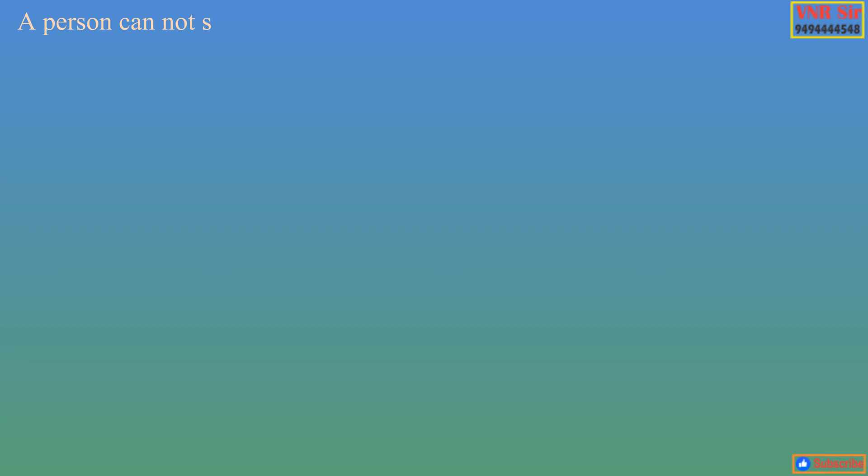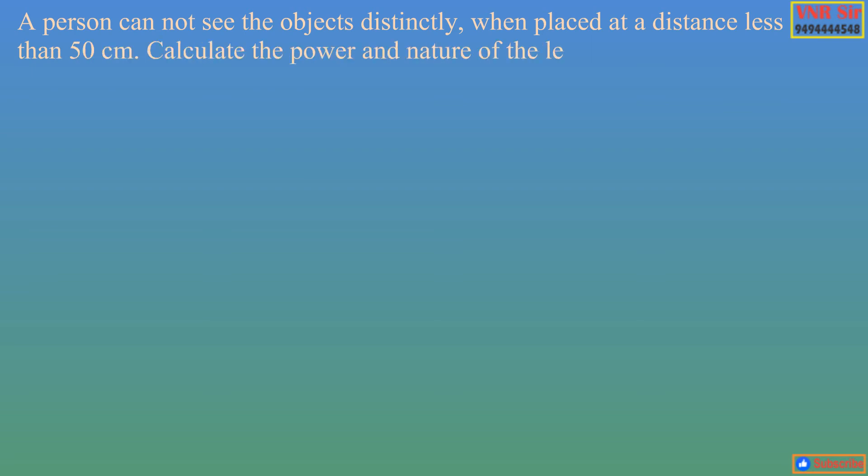Here is a question for us. A person cannot see the objects distinctly when placed at a distance less than 50 cm. Calculate the power and nature of the lens he should be using to see clearly the objects placed at a distance of 25 cm from his eyes.